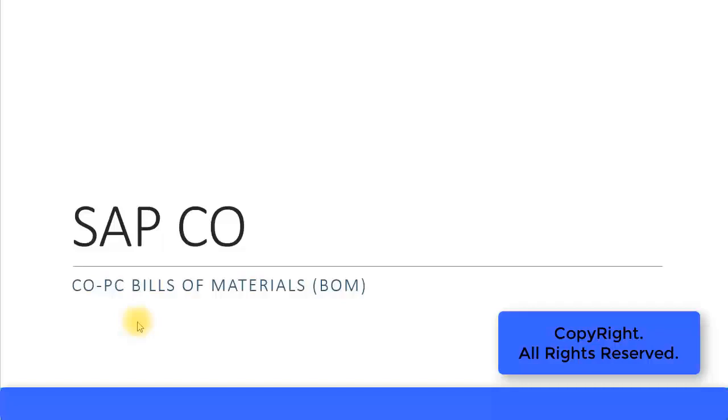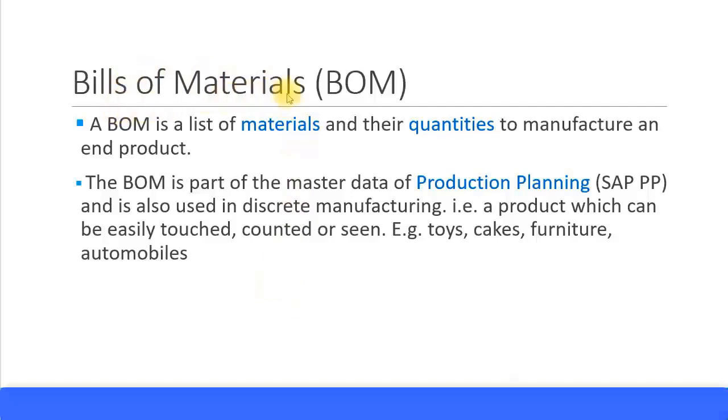In this presentation, we will look at Bills of Materials, more commonly abbreviated as BOM or BOMB. A BOM is a list of materials and their quantities required to manufacture an end product. When I mean end product, it's a finished good. If you want to create one finished good or product, what are the ingredients you need, what are the items you need, and what quantities you need? That's basically the BOM.